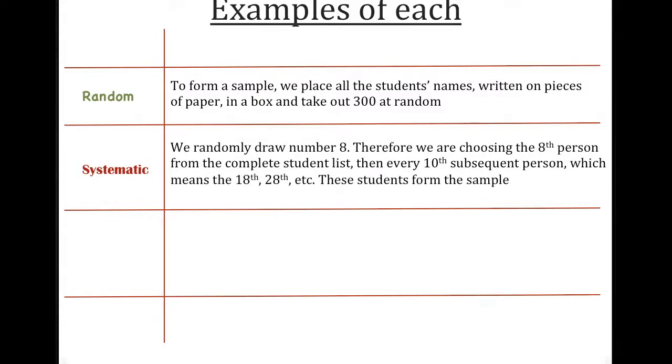A systematic sample is when we randomly draw number 8, and therefore we choose the 8th person. And then after that we decide to choose every 10th person, which means the 18th and the 28th, and these students form the sample. So we first choose the 8th person, and then after that we decide every 10th after that. So when we say every so often, that's systematic.